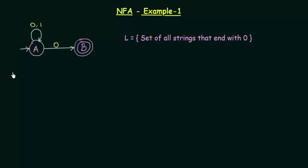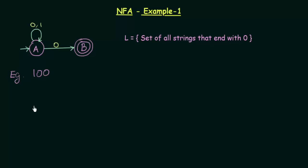Let us take two examples. The first one being 1 0 0. Since this NFA accepts the set of all strings that end with 0, it should accept this string because this string ends with 0. Let us see how this NFA behaves.